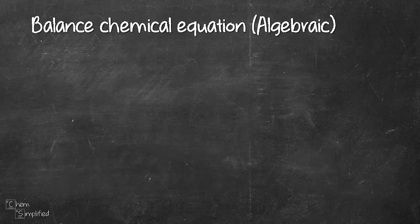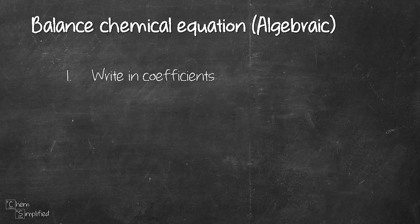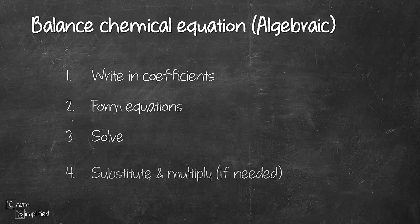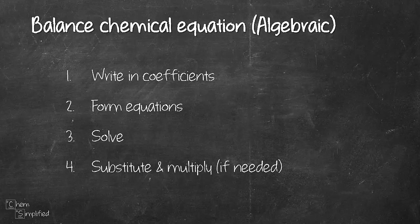Let's recap on the steps we went through. We first write in our coefficients in front of each term. Then we form equations for each element. Then we make an assumption and start solving the equations. Once we got the values, we plug them in. We'll need to multiply across to remove fractions if necessary.